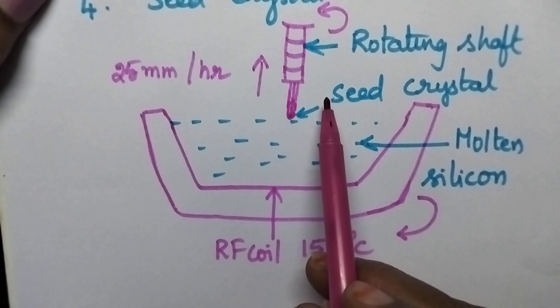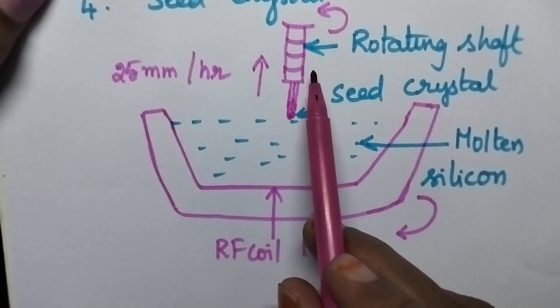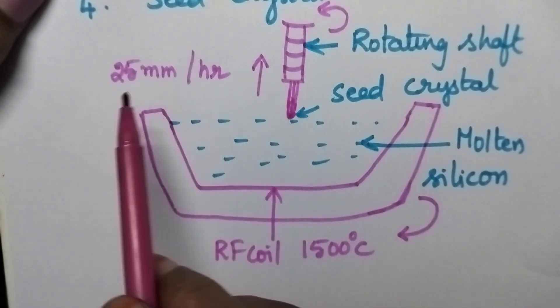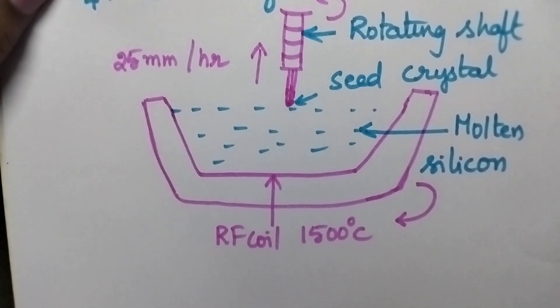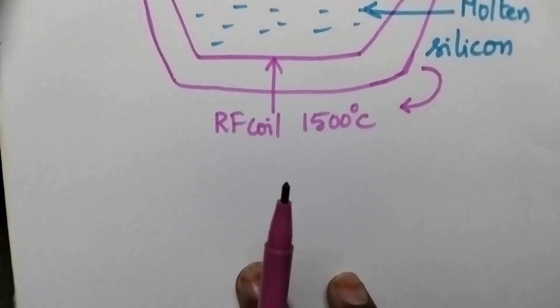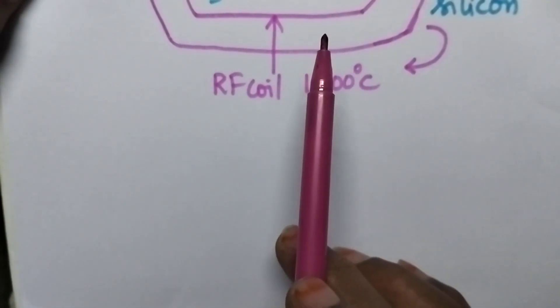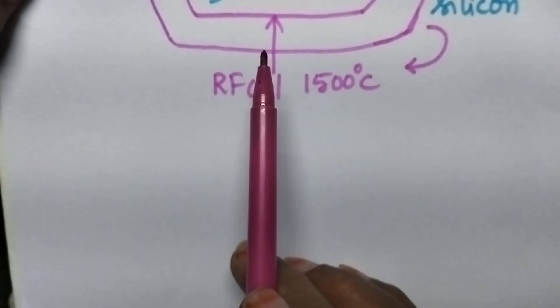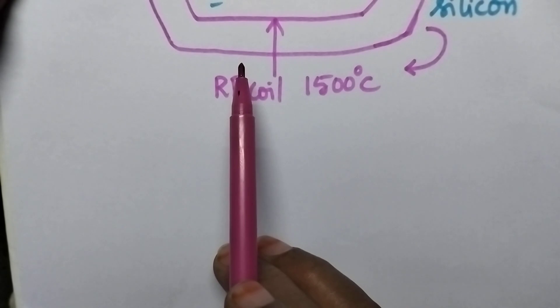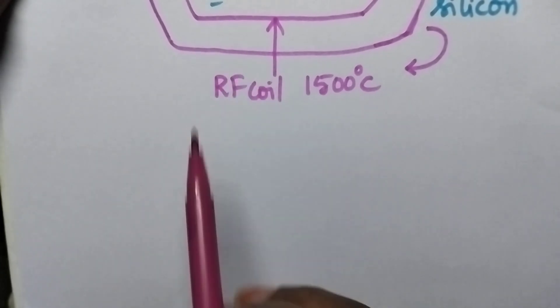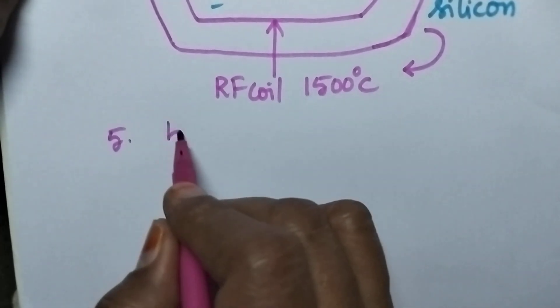The rotating shaft will be moved in upward direction very slowly so that it can move a distance of 25 mm per hour. In this way, all the molten silicon will be crystallized such that all the silicon will get the seed crystal dimensions, and the resultant silicon is called as baule.